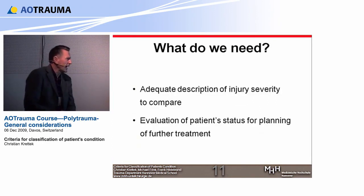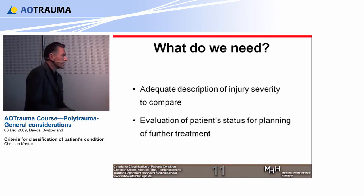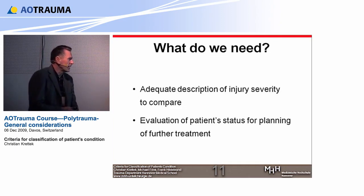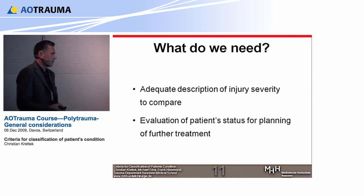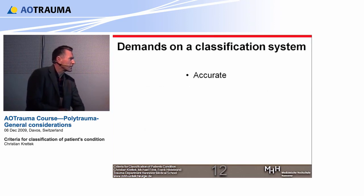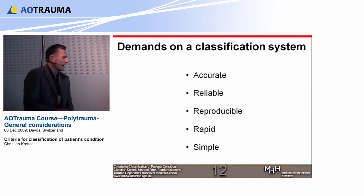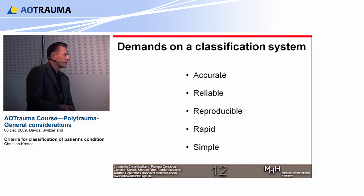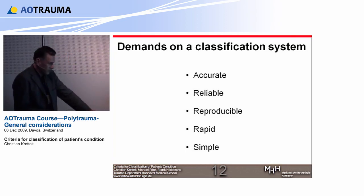There is a hard struggle for more data and more evidence to get better instruments to judge our patients adequately. We need an adequate description of injury severity to compare different treatment options and results published in the literature. We also need to evaluate the patient's status for planning of further treatment — can we do procedure X and Y today, or do we need to wait a couple of days? The demands of a classification system are: accurate, reliable, reproducible, rapid, and simple. This is hard to address — it's either accurate or simple, but very hard to have all characteristics at the same time.